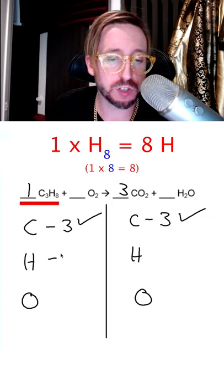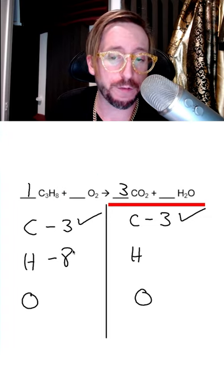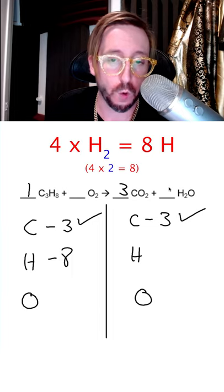Looking on the left, I see that the total number of hydrogens is 8. Now on the right side, in order for there to be 8 hydrogens, I need to put a 4 in front of this water.